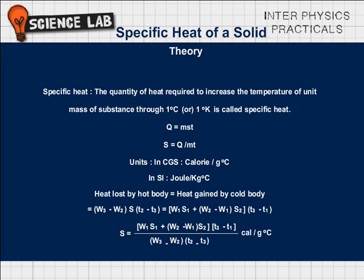Heat lost by hot body is equal to heat gained by cold body. That is, (W3 - W2) × S × (T2 - T3) is equal to [W1 × S1 + (W2 - W1) × S2] × (T3 - T1). Therefore, S equals [W1 × S1 + (W2 - W1) × S2] × (T3 - T1) divided by (W3 - W2) × (T2 - T3), calorie per gram degree centigrade.